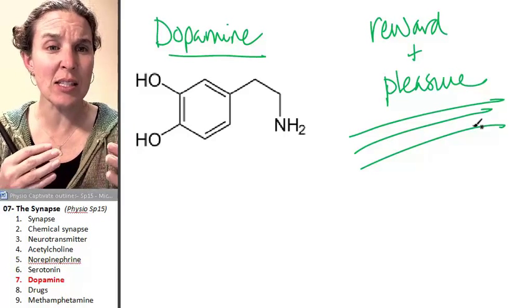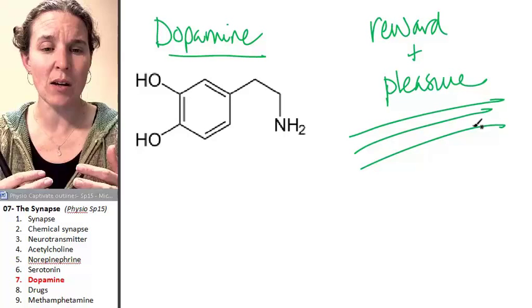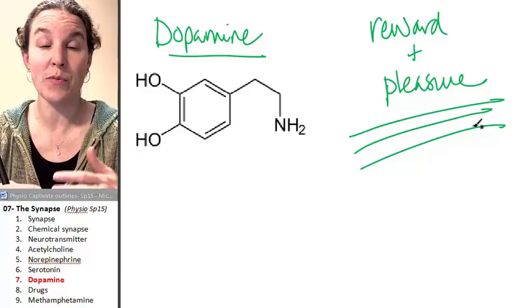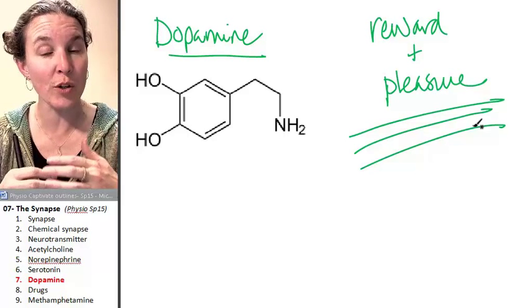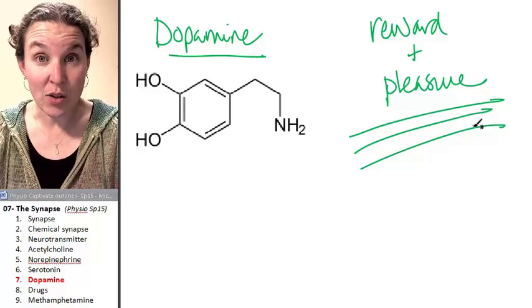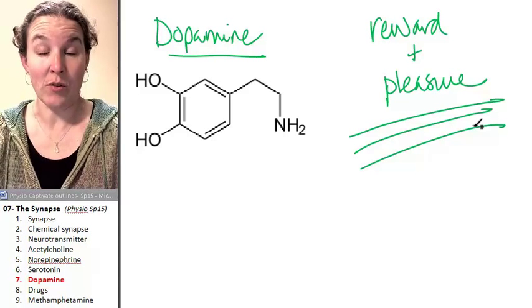So Parkinson's is a condition where you have physical tremors. Your brain is fine, but you don't have control over your body anymore. And that's associated with low dopamine levels.